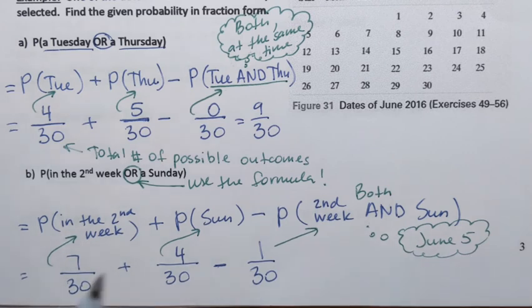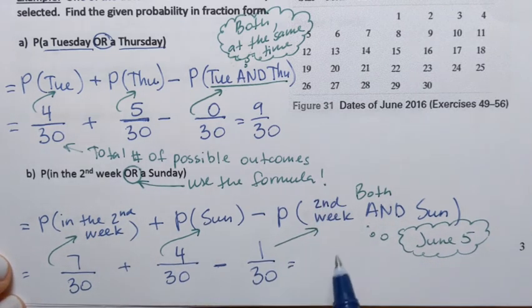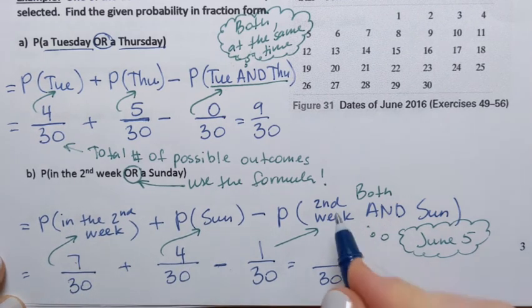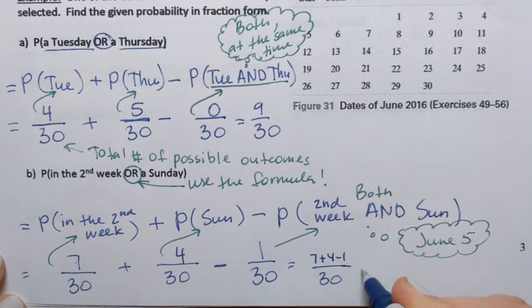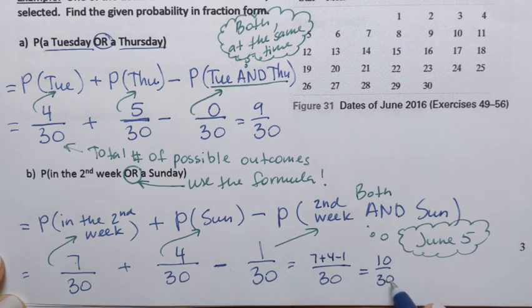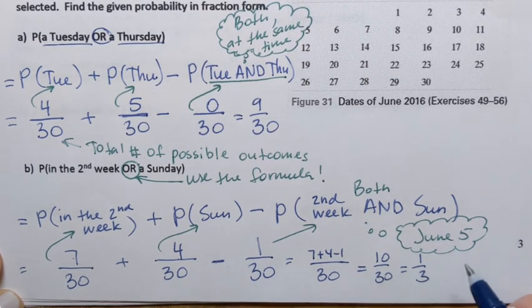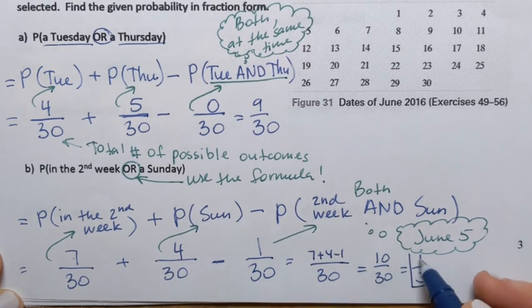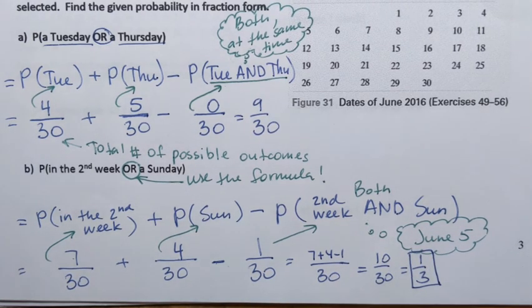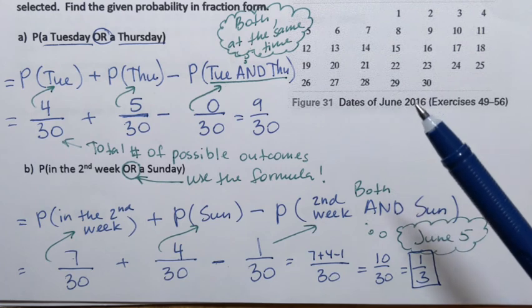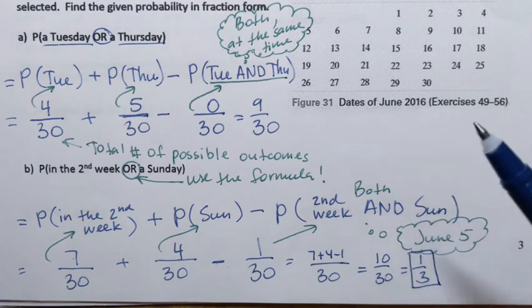Now we add and subtract the fractions, keeping the denominator and operating on the numerators: 7 plus 4 minus 1 equals 10, so the result is 10 over 30. That can be simplified by dividing by 10, giving us 1 over 3. So the probability is 1/3, or approximately 0.33, or a 33% chance that the randomly selected day from that month is in the second week or a Sunday.